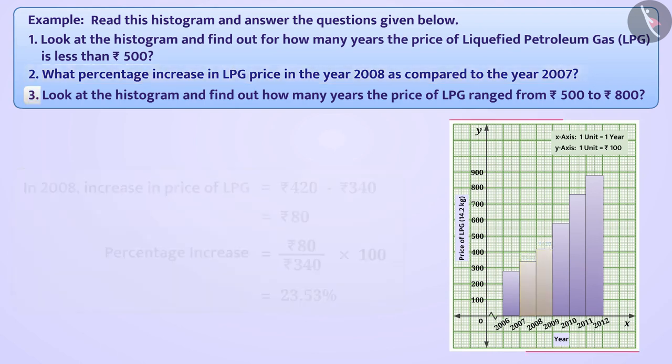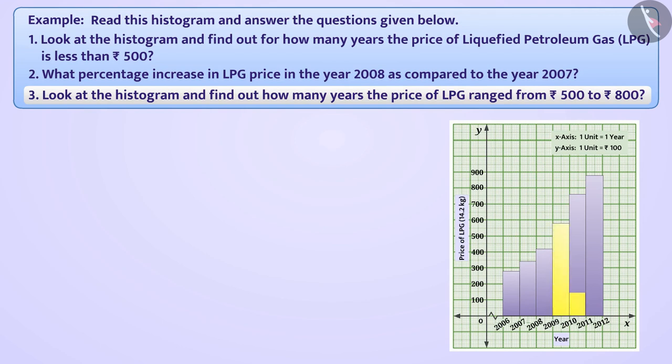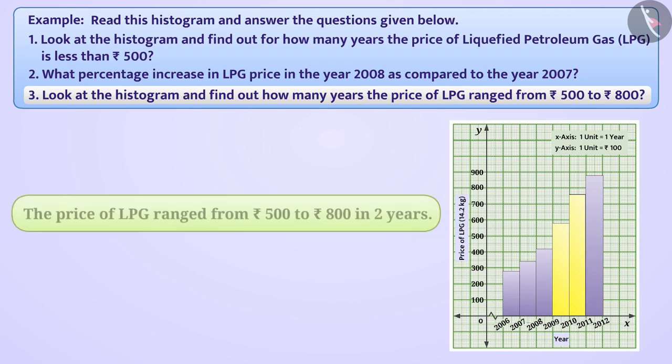Look at the histogram and find out how many years price of LPG ranged from 500 rupees to 800 rupees. In the year 2009-2010, in the year 2010-2011 class intervals, the price of LPG is between 500 and 800. So, we can say that in 2 years, the price of LPG ranged from 500 rupees to 800 rupees.